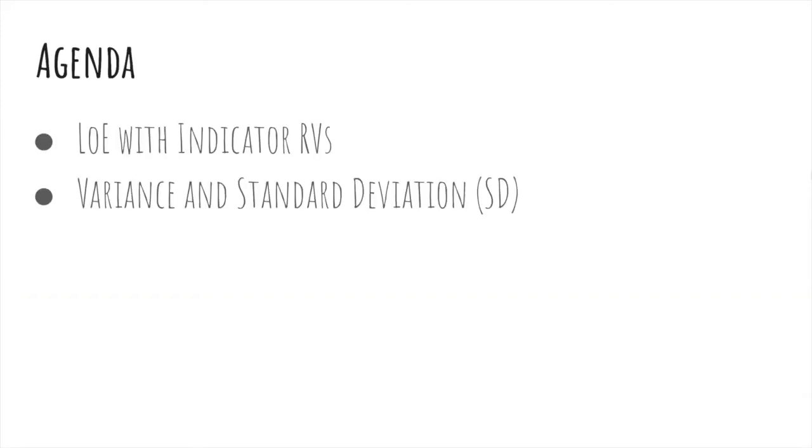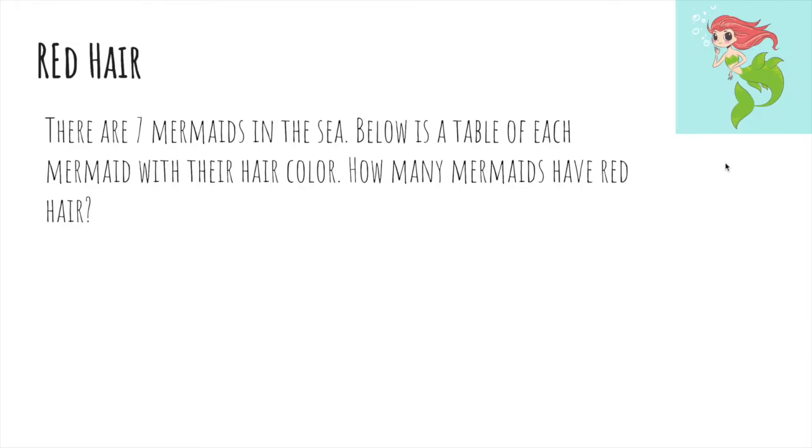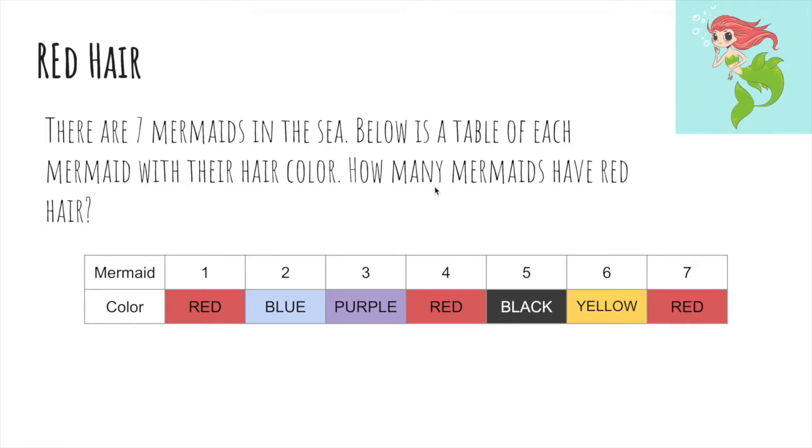In this video, we'll talk about variance, but first we'll talk about linearity of expectation with indicator random variables. So let's say there are seven mermaids in the sea. Below is a table of each mermaid with their hair color. How many mermaids have red hair?